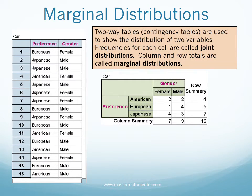The more information that is gathered, the more relationships can be explored. So we also include the gender of each respondent. We can now create a two-way table, also called a contingency table, showing the distributions of the two variables, with the three car preferences as rows and gender as columns. This creates six cells, and the frequencies for each cell are called a joint distribution. We then add up the rows and columns. These totals are called marginal distributions, named because they are in the margins of the table. Note that the row totals four, five, and seven add to 16, while the column totals seven and nine also add to 16. It is always a good procedure to be sure that the row totals and column totals are equal to ensure you didn't make a mistake in addition.